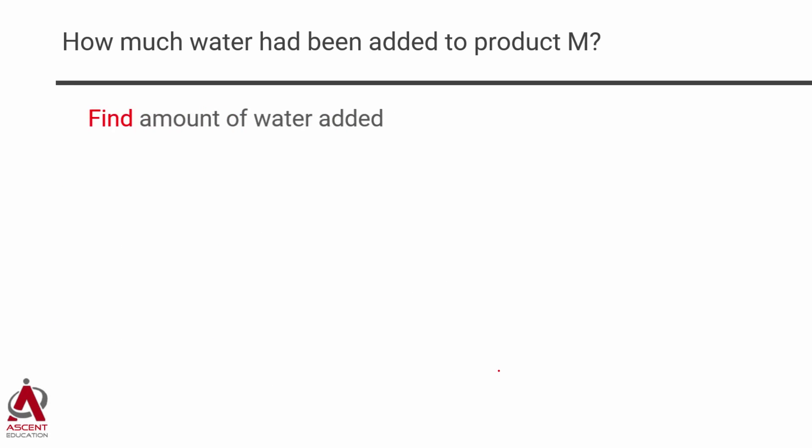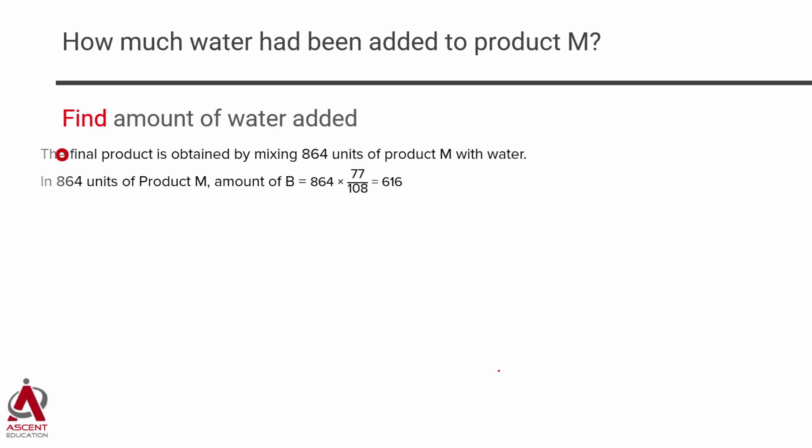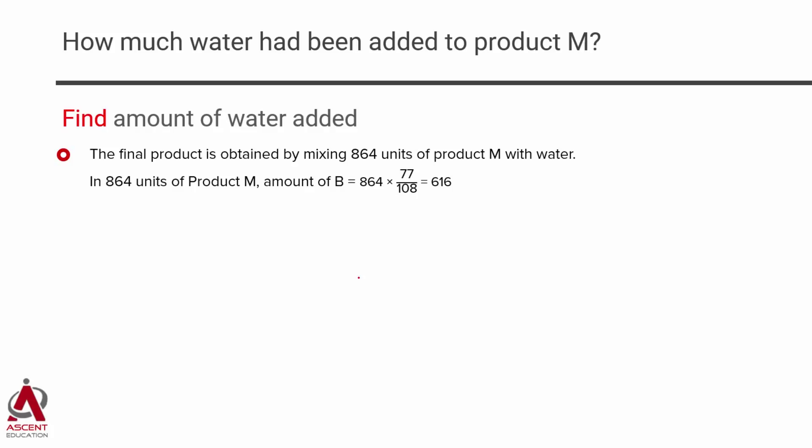The next step, we will actually find the answer. Let's find the amount of water. Let's start with this process. The final product is obtained by mixing 864 units of product M with water. So, how much of B will be there? If there is one unit of M in that 77 by 108 is going to be B. We have 864 units of M. Therefore, the amount of B in it is going to be 864 into 77 by 108. It actually will beautifully cancel out as an 8. So, the answer is going to be equal to 616.